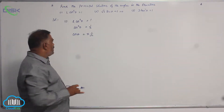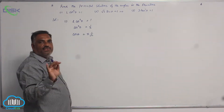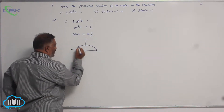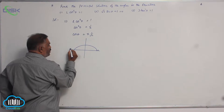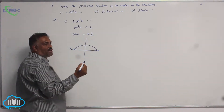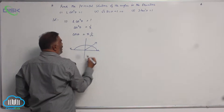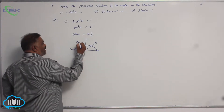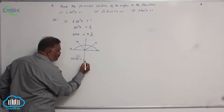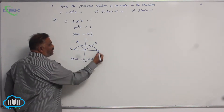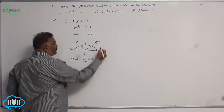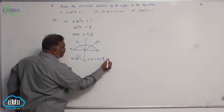The domain of cos theta is 0 to pi, written as [0, π]. Cos theta takes the value plus 1 by root 2 in the first quadrant. So cos theta equal to 1 by root 2 implies theta is equal to 0 plus pi by 4, that is pi by 4.